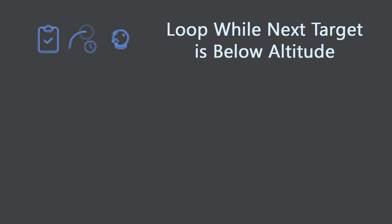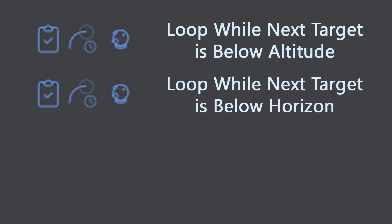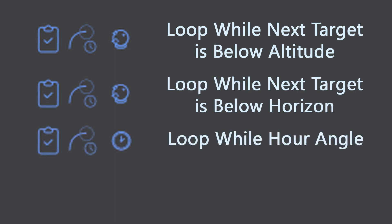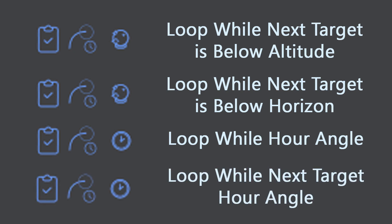One of the most commonly requested features was the ability to jump to the next target only when it's ready to shoot. Orbuculum does this by adding a couple of useful loop conditions to the advanced sequencer. Those loop conditions are: loop while next target is below altitude, loop while next target is below horizon, loop while hour angle, and loop while next target hour angle. The advanced sequencer works best in loops — these are sets of instructions that repeat until a defined condition is met, and then it moves on to the next set of instructions.